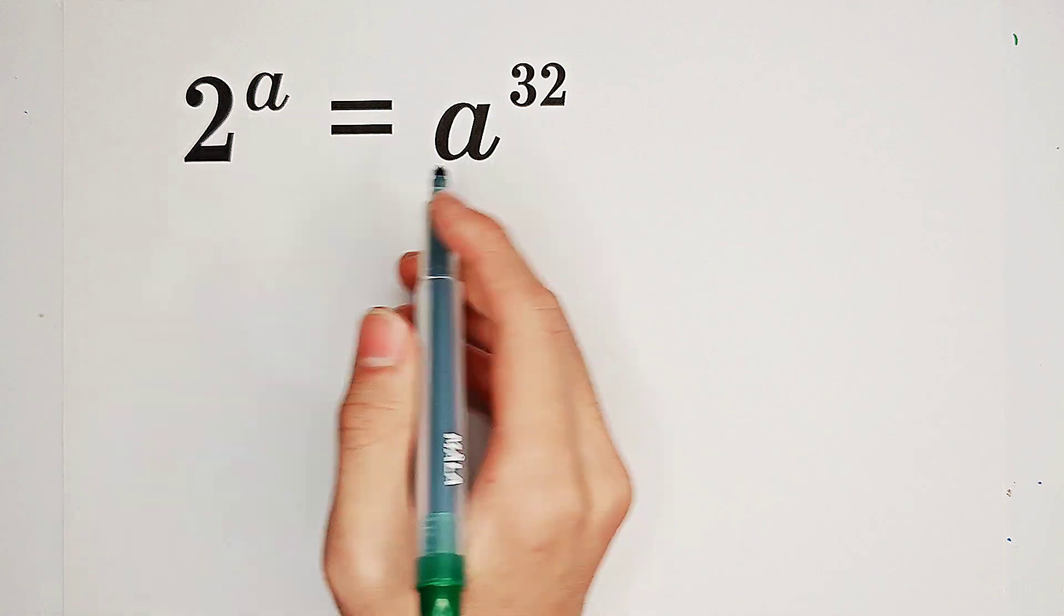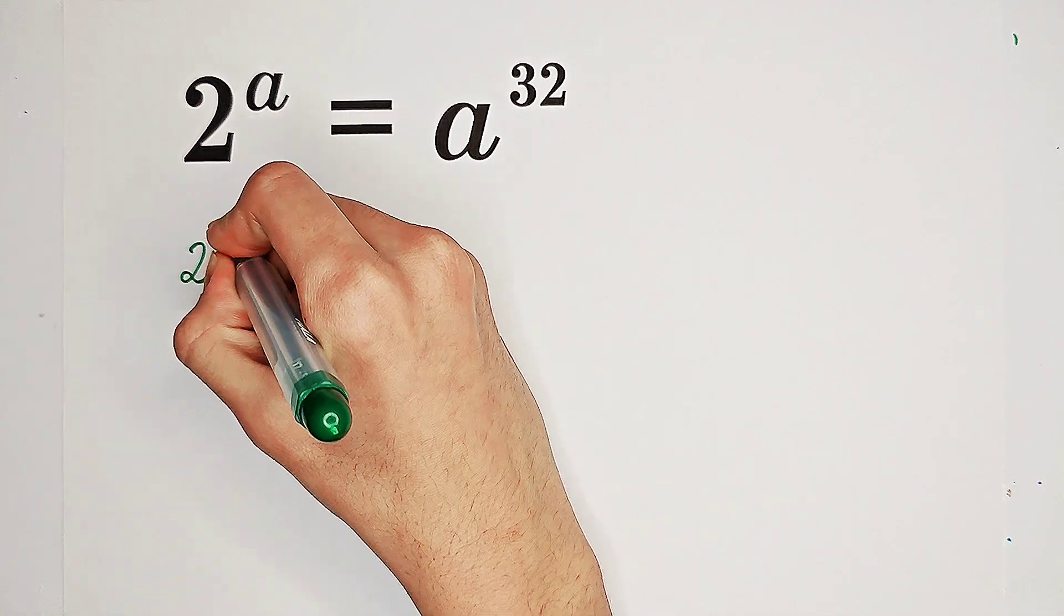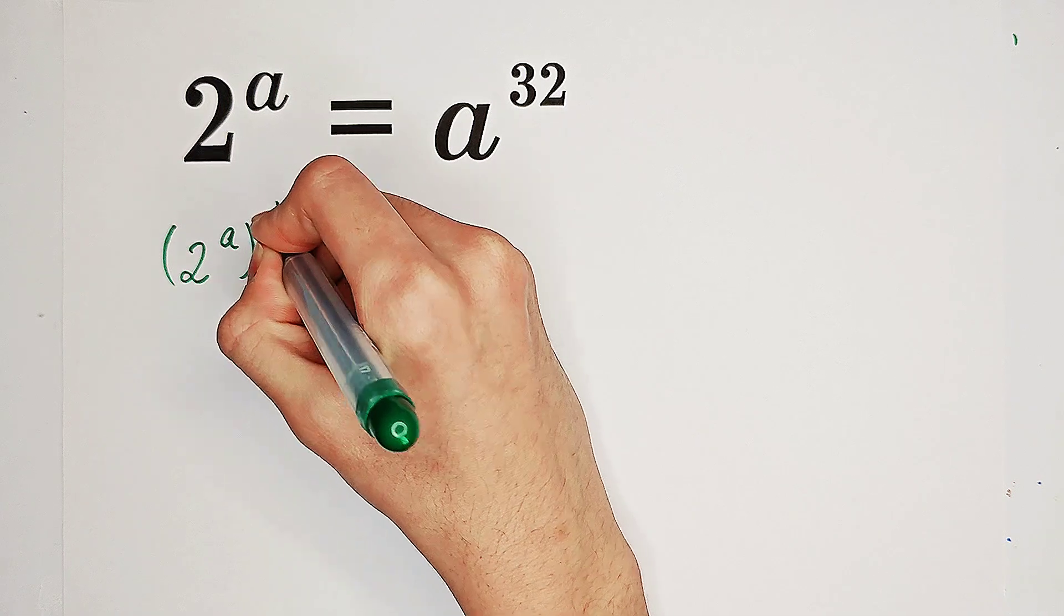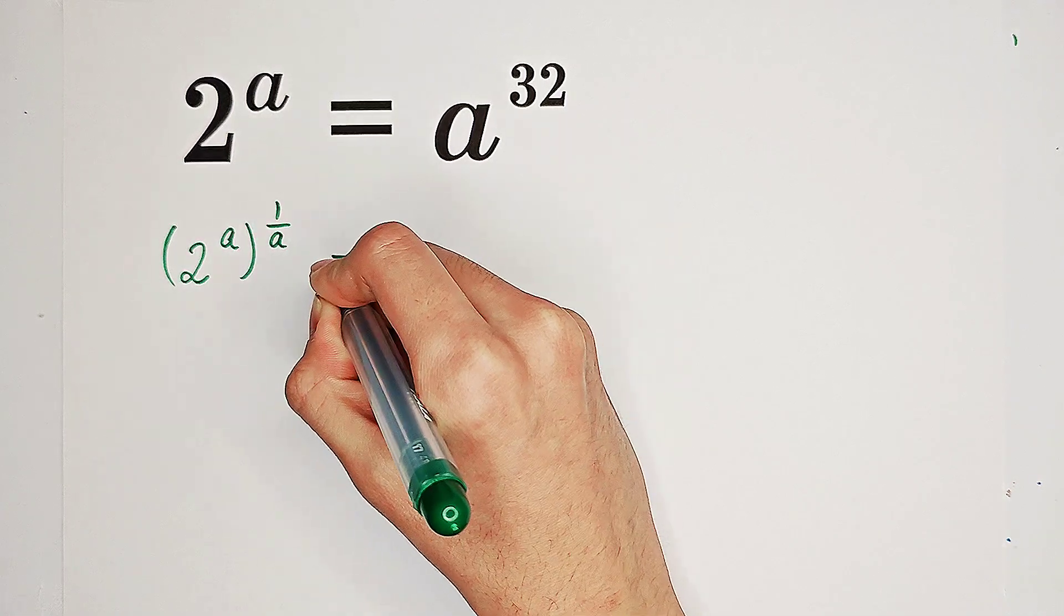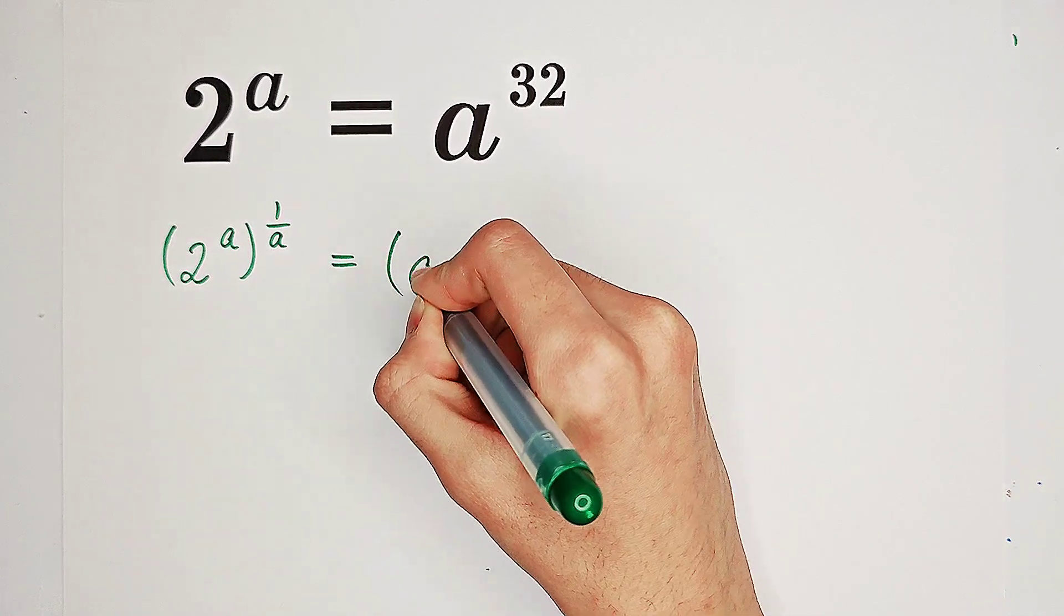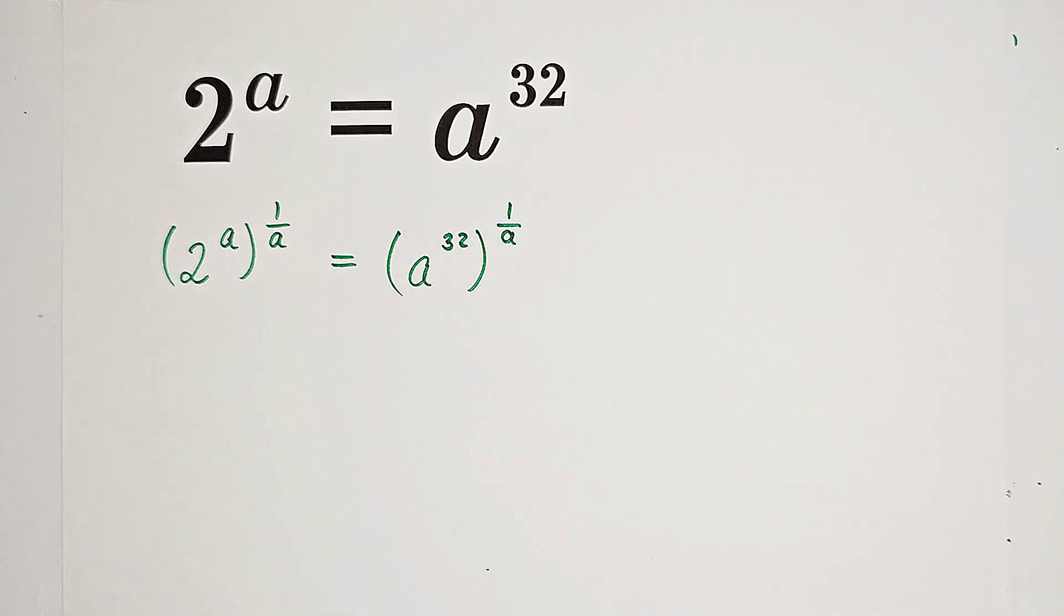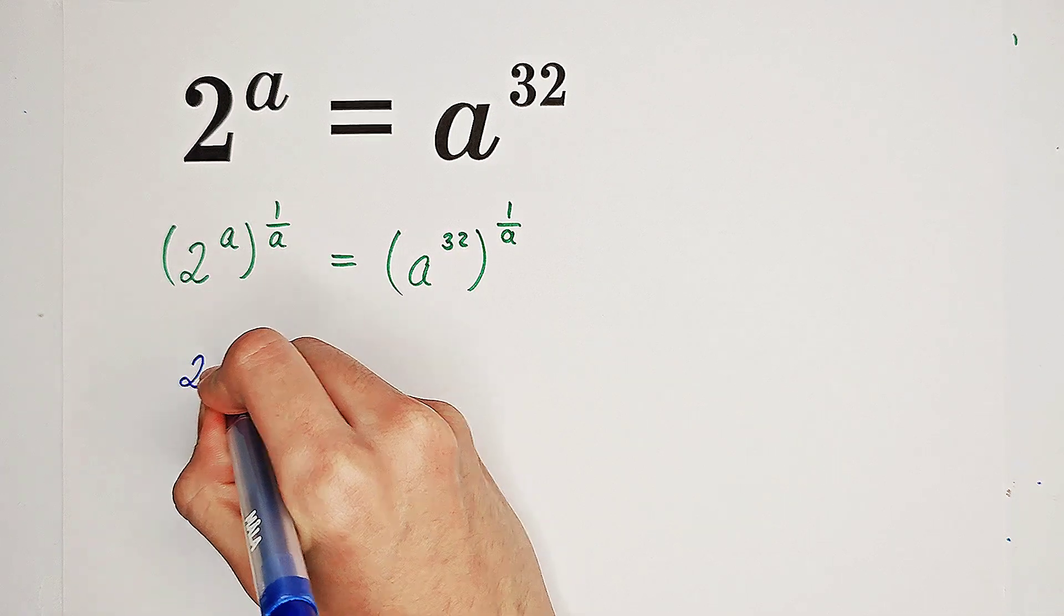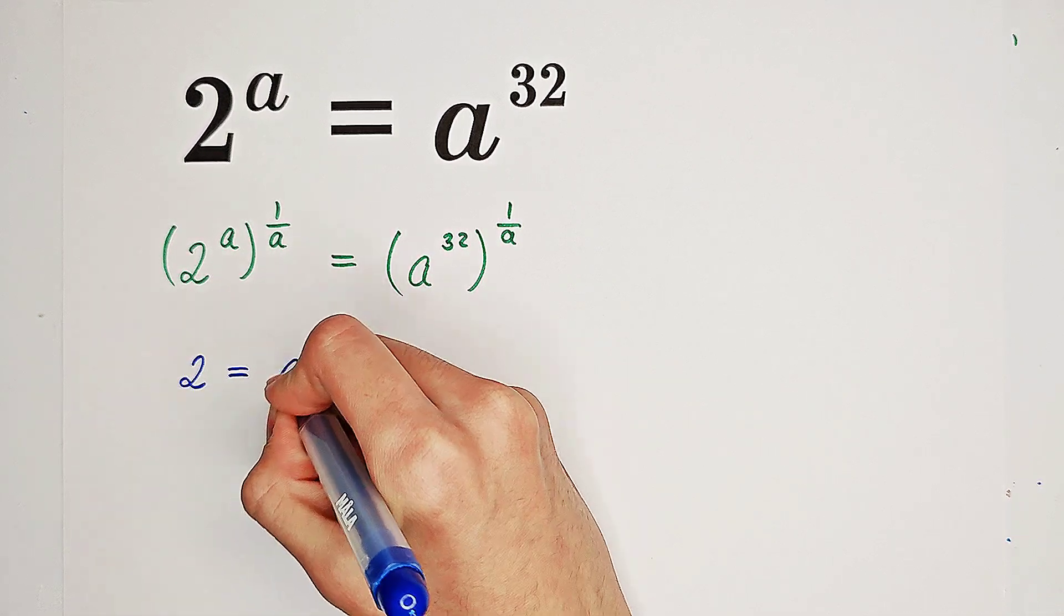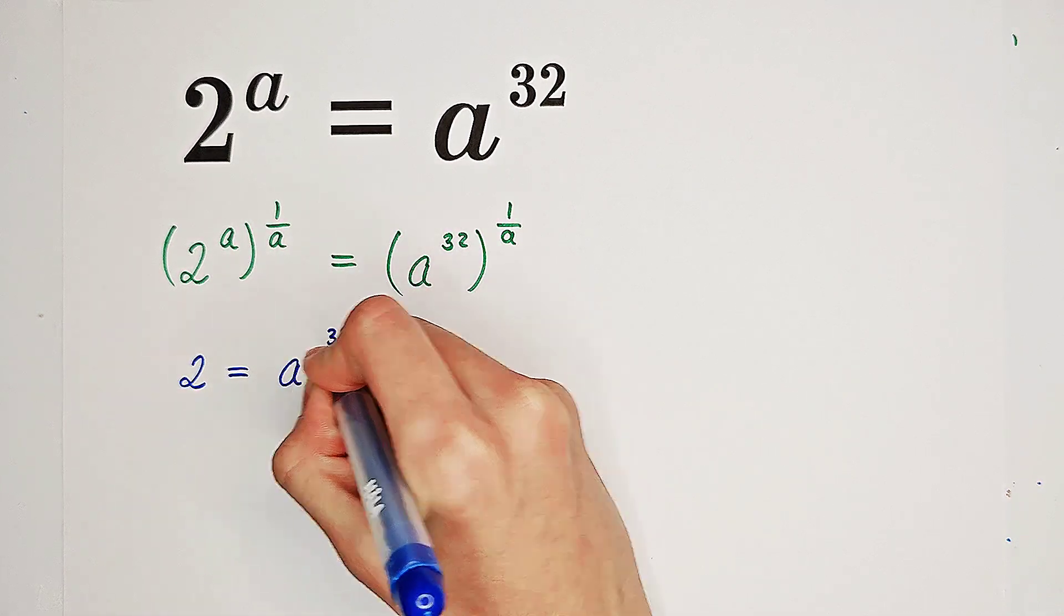Now, firstly, let's take a power of 1 over A on both sides. Therefore, on the left-hand side, we just have 2, equals A to the power of 32 over A.